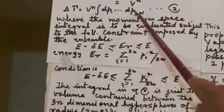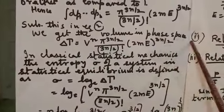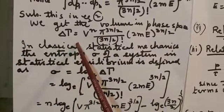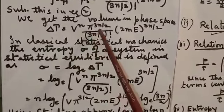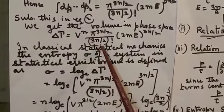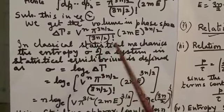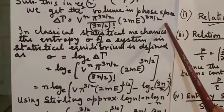Now substituting this into equation 2, we get the volume in phase space: delta tau = V^N * pi^(3N/2) / (3N/2)! * (2mE)^(3N/2).